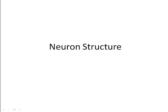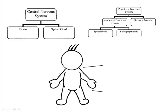This video is about neuron structure. The nervous system has two major divisions. The central nervous system consists of the brain and spinal cord.